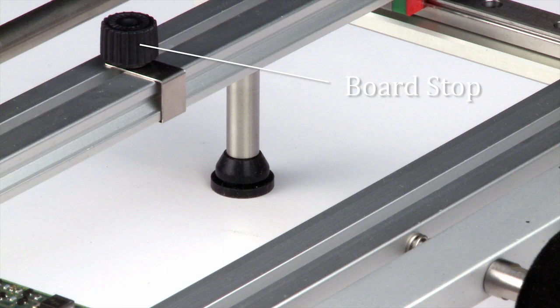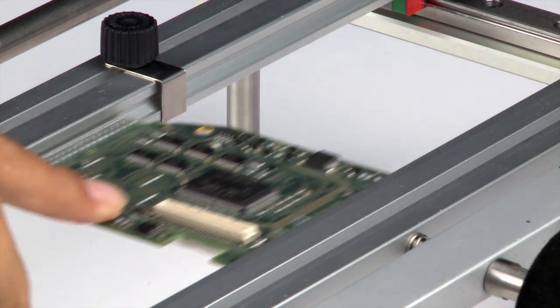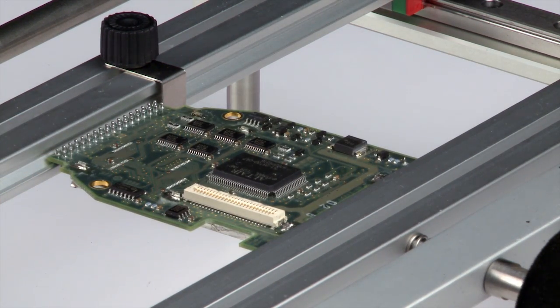An indexing stop in the top of the channel of the rail can be used to position another exact board into the same position for a repeatable operation.